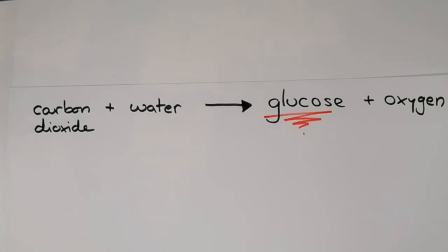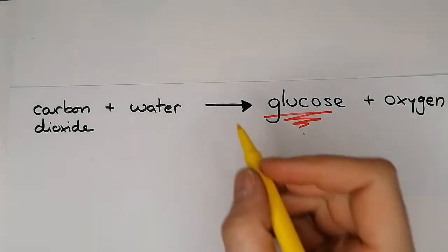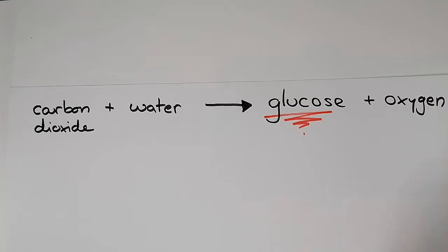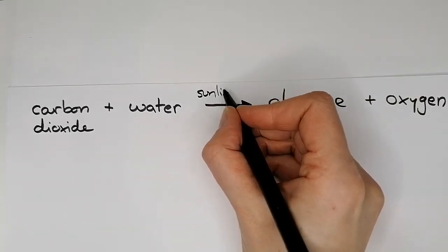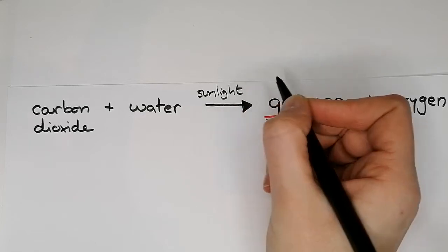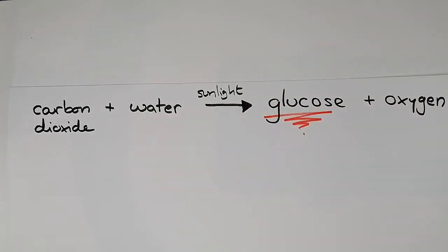So what we also need is sunlight, and it is that sunlight that is providing the energy for this process. Carbon dioxide and water do not spontaneously make glucose. They need energy to go in and that energy goes in because of the sunlight.